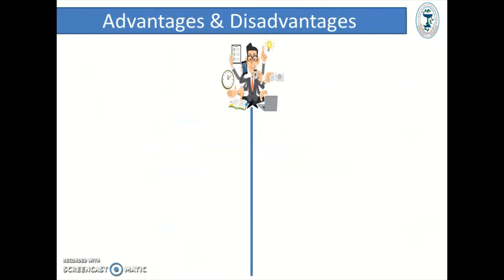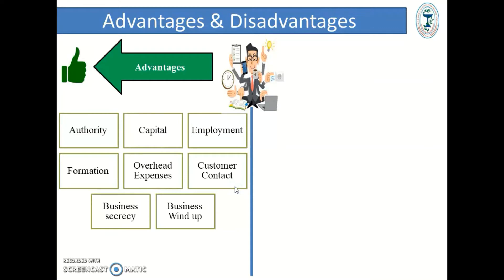Advantages of sole proprietorship. First, authority — the owner has full authority over the business and is free to prepare any plans and policies without interference. Capital — business can be started even with small capital, which can be increased or decreased at the will of the proprietor. Employment — employment of workers depends on the will of the proprietor. Formation — it is very simple and easy. Overhead expenses — overhead expenses of management are generally less. Personal contact — the proprietor has intimate contact with customers. Business secrecy — it can be maintained and business conduct is according to the will of the proprietor.